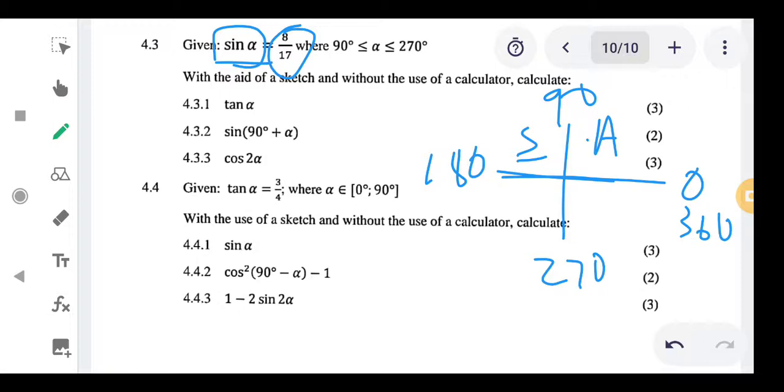The statement says that alpha should be an element between 90 up until 270. Can you see that? So your alpha should be somewhere between 90 up until 270. There's something that alpha cannot be - alpha cannot be an angle less than 90.